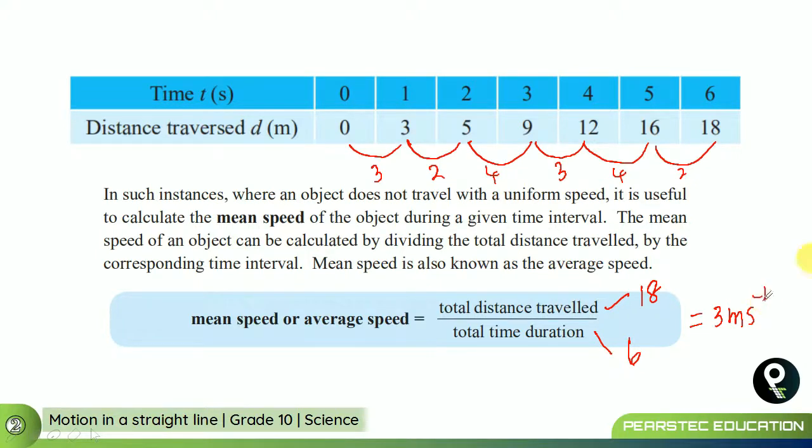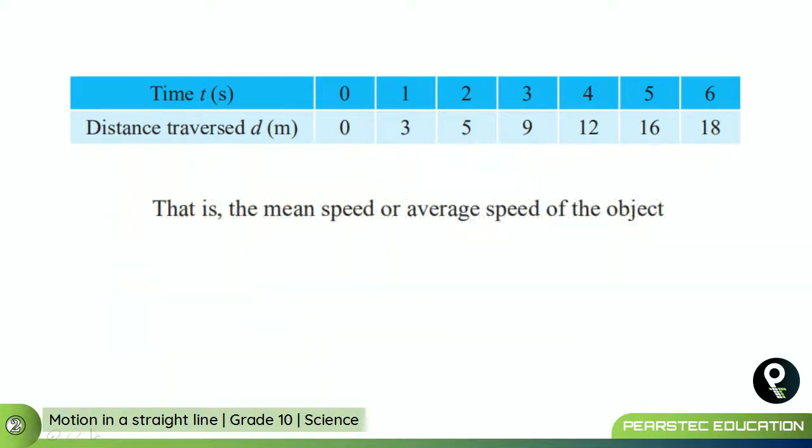So, that is the mean speed of this particular chart. If somebody is asking you to calculate it, you can calculate that. That means, the mean speed or average speed of the object should be calculated when there is no proper interval between one time to another time. So, we came to know about speed and mean speed in this session.